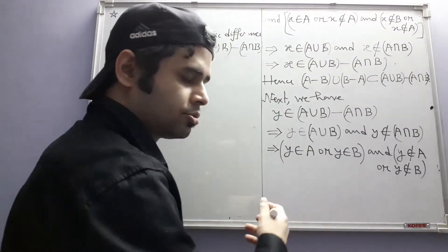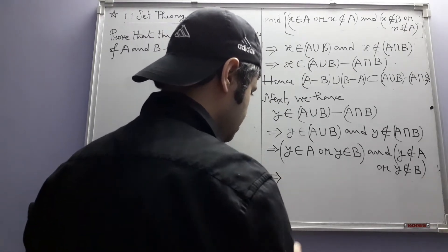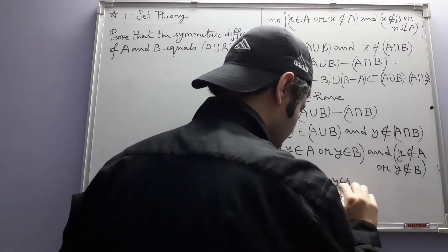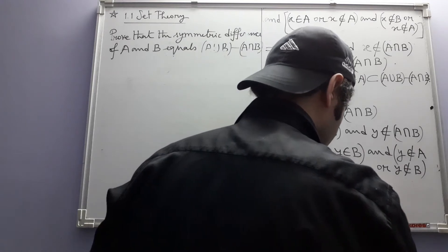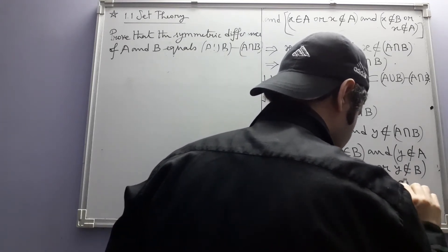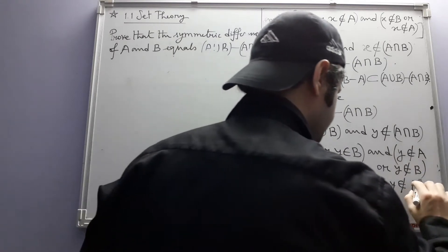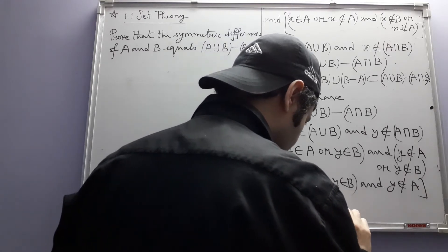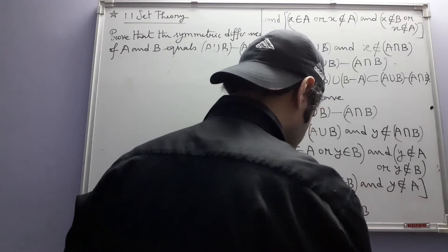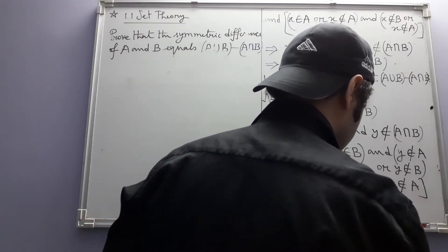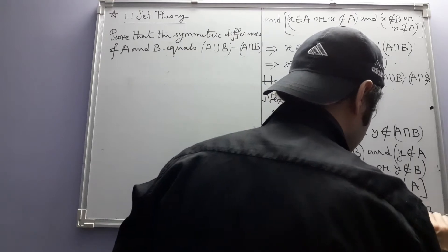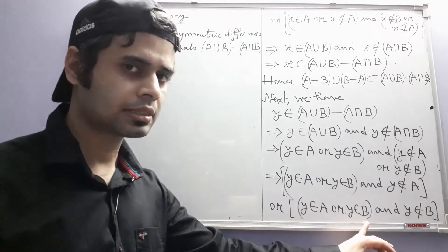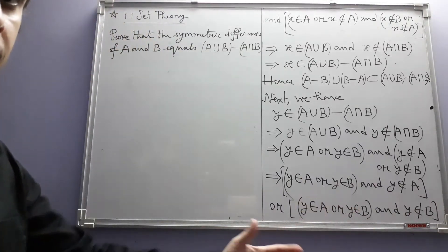Then we do the usual distributive thing: Y belongs to A or Y belongs to B, and Y does not belong to A or Y belongs to B. Keep in mind that whatever you are writing, it should be correct. This place is somewhat complicated and we may make mistakes very easily.